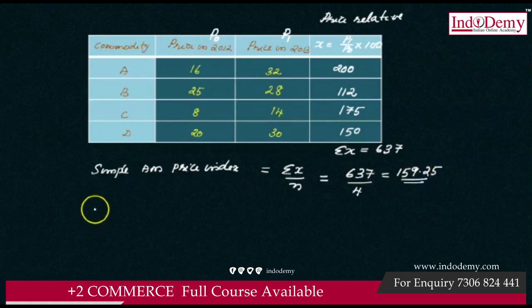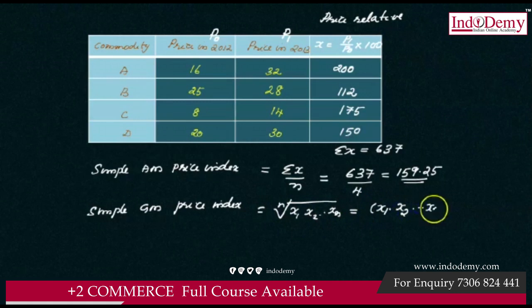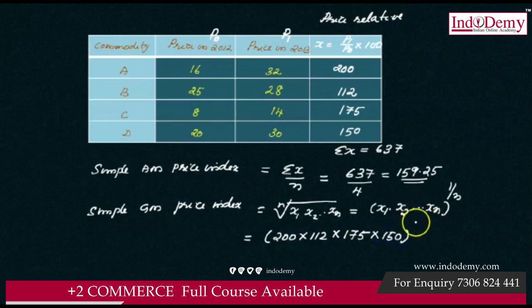The geometric mean price index number uses the same formula: nth root of x1, x2, ..., xn, raised to 1 by n. With our four price relatives x1, x2, x3, x4 (200, 112, 175, 150), we compute the fourth root of their product. The answer is 155.72.